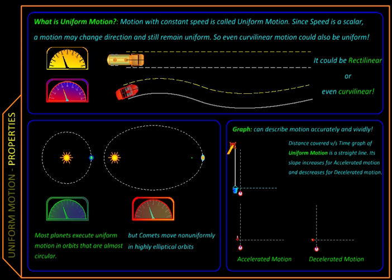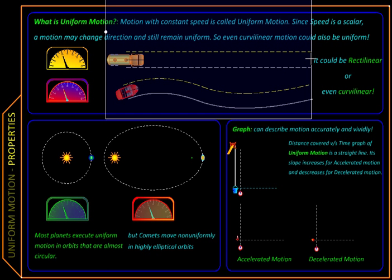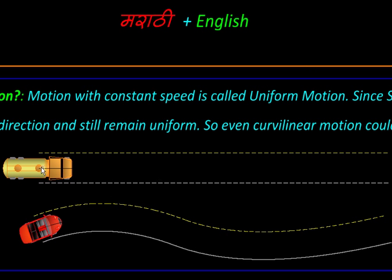But rectilinearity and uniformity are two independent properties of motion. They may or may not occur together. Let us look at an example.